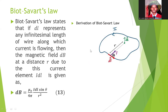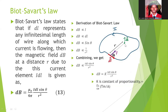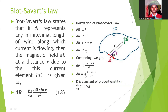Let's derive Biot-Savart law. Using the figure, the differential change in magnetic field is directly proportional to the current flowing in the conductor, directly proportional to the change in the segment of the conductor, directly proportional to the sine of the angle, but inversely proportional to the square of the distance from the point where we want to find the magnetic field. Combining and substituting, we have equation 13, which is the mathematical statement of Biot-Savart law.